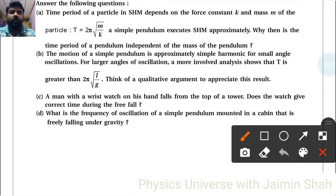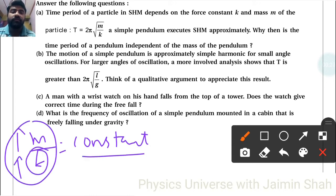Answer the following questions. Time period of a particle in SHM depends on the force constant k and mass m of the particle. T equals 2π√(m/k). A simple pendulum executes simple harmonic motion approximately. Why then is the time period of pendulum independent of the mass of the pendulum? Because m upon k is constant. If k increases, m also increases. That's why they are constant, and the time period is independent of mass of the pendulum.